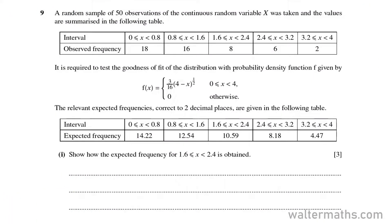The question says: a random sample of 50 observations of the continuous random variable X was taken, and the values are summarized in a table with observed frequencies. It is required to test the goodness of fit of the distribution with probability density function f(x) = (3/16)(4 - x)^(1/2) for 0 ≤ x ≤ 4, and 0 otherwise. The relevant expected frequencies correct to 2 decimal places are given in another table. Part 1: show how the expected frequency for the interval 1.6 to 2.4 is obtained.